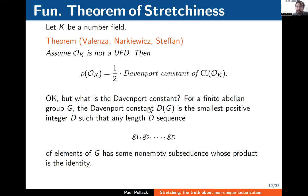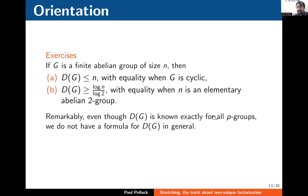Whether you consider this a reasonable theorem depends on whether you know what the Davenport constant is. For a finite abelian group G, the Davenport constant D(G) is the smallest positive integer D such that any D elements of the group contain a non-empty subsequence whose product is the identity. Two useful orientation facts: the Davenport constant is always at most the size N of the group, with equality when G is cyclic. In the opposite direction, D(G) is always at least log base 2 of N, with equality when G is an elementary abelian 2-group.